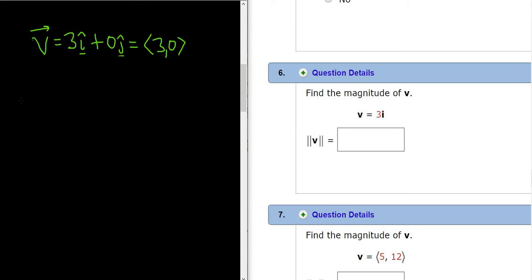The formula for the magnitude of this vector is: the magnitude of v equals the square root of the components squared. So you do a squared plus b squared. In this example, a equals 3 and b equals 0. So this equals the square root of 3 squared plus 0 squared. This equals the square root of 9, which is just equal to 3. So that would be the magnitude of this vector.